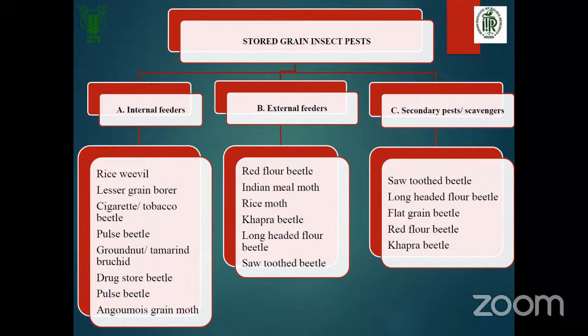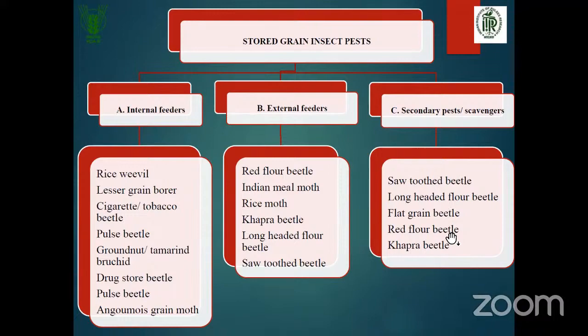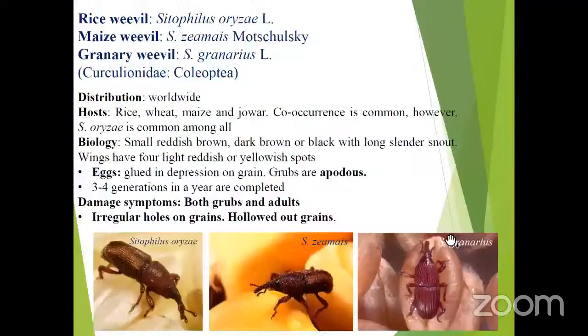Internal feeders include rice weevil, lesser grain borer, cigarette beetle, pulse beetle, groundnut beetle, drugstore beetle, and Angoumois grain moth. External feeders include red flour beetle, Indian meal moth, rice moth, Khapra beetle, long-headed beetle, and sawtoothed beetle. Secondary feeders include sawtoothed beetle, long-headed flour beetle, and flat-grained beetle. In case of Lepidoptera, Indian meal moth and Khapra beetle are also secondary feeders.